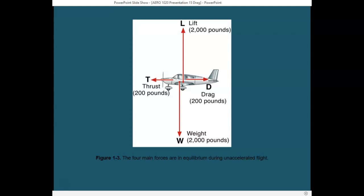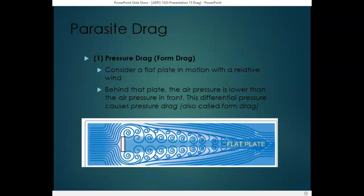When lift equals weight, the airplane is flying level — it's neither climbing nor descending. Now let's review the different types of parasite drag. There are four types. The first is pressure drag or form drag. If you consider a flat plate in motion in the relative wind, that flat plate is going to create some disturbance or turbulence. Because of that turbulence behind the plate, the air pressure is lower than the air pressure in front of the plate.